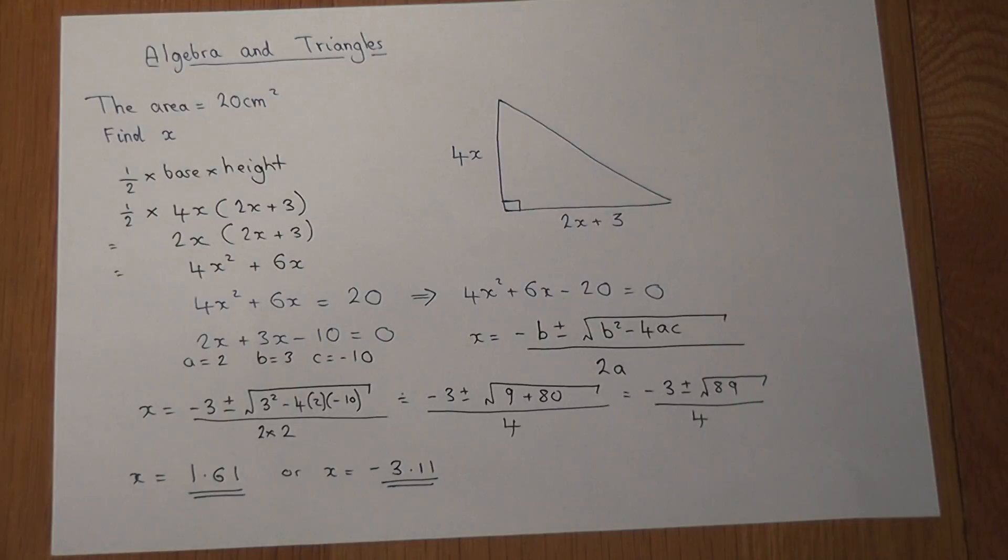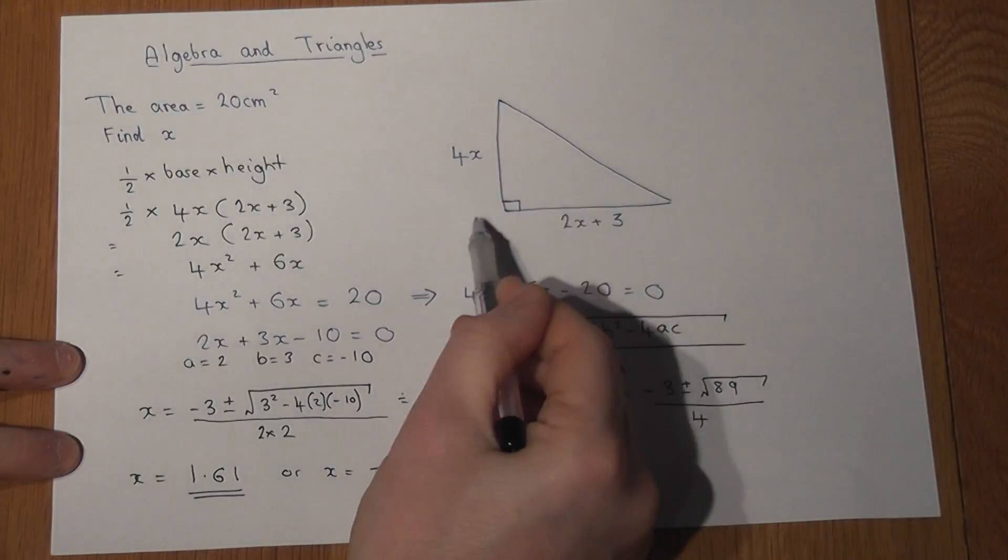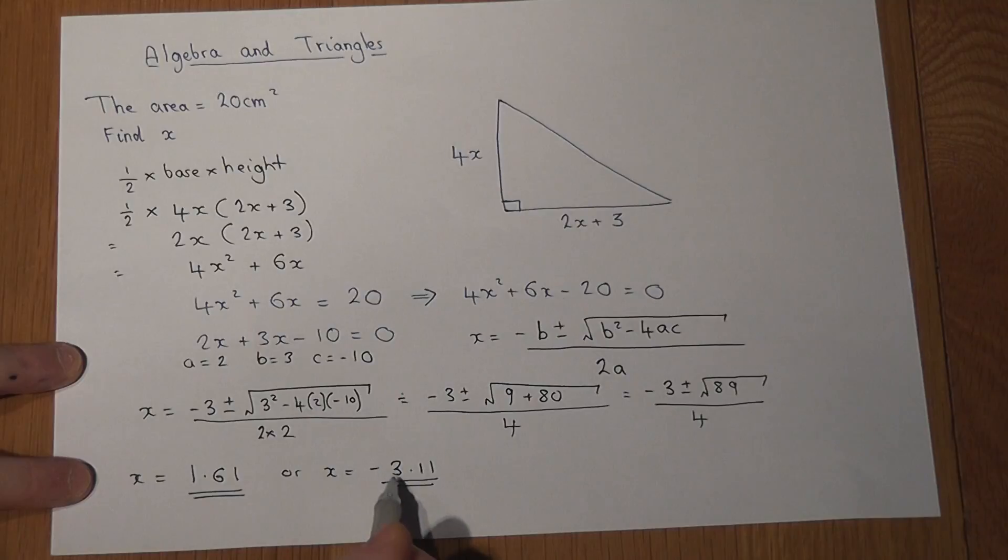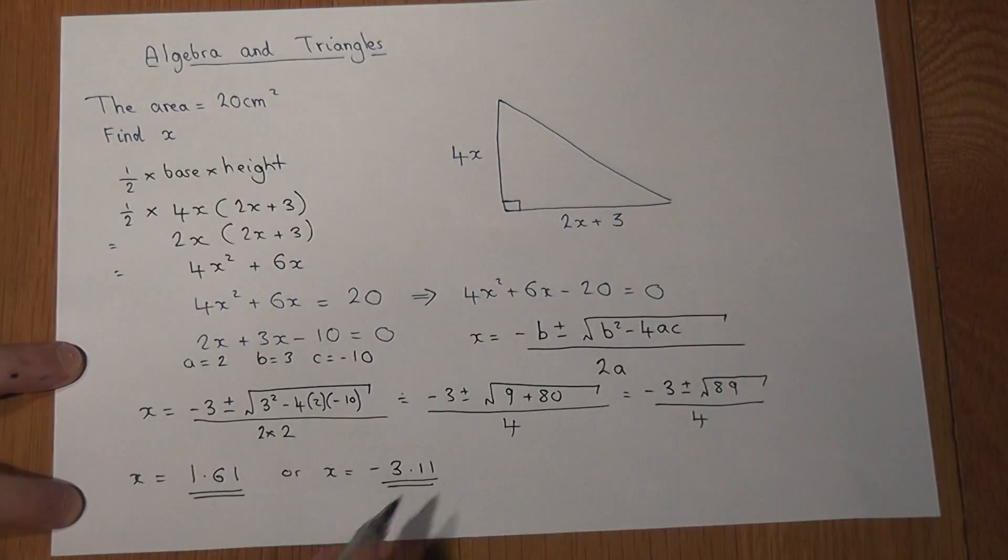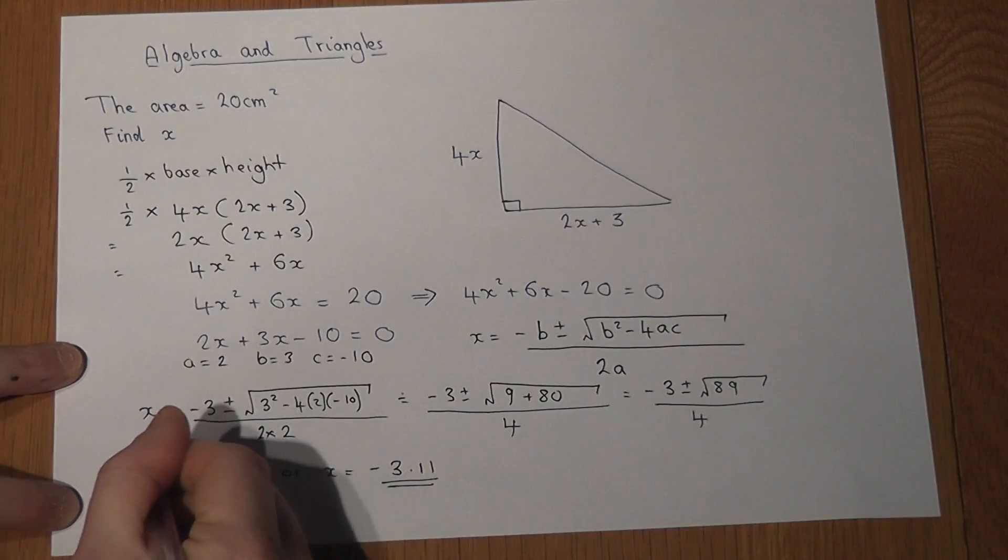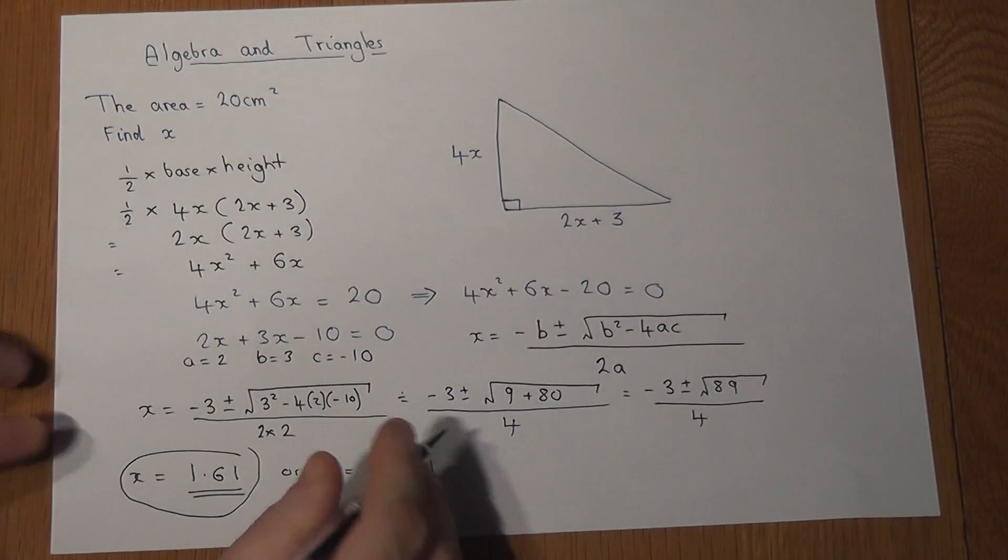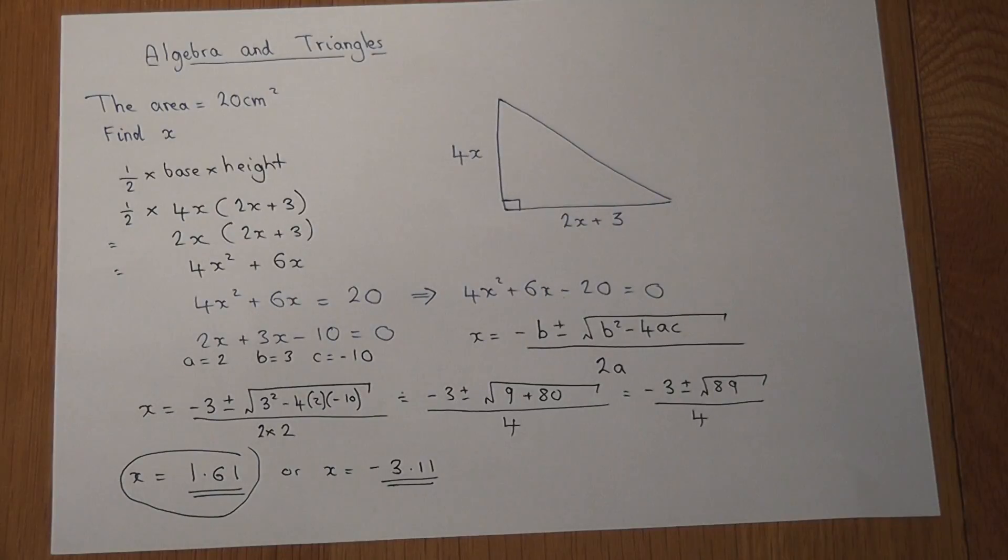Now because x represents lengths within a triangle, x cannot be negative because that would be a negative height. Therefore, the solution for this triangle is that x equals 1.61 to 2 decimal places.